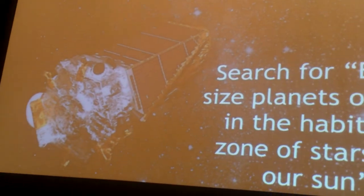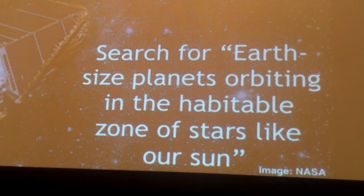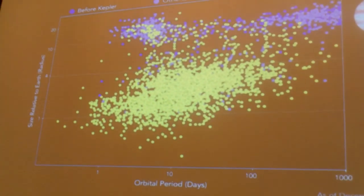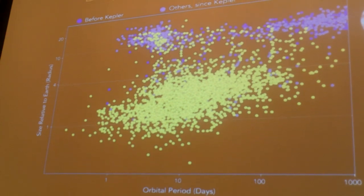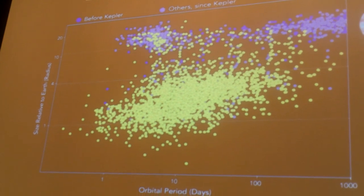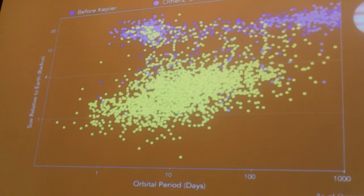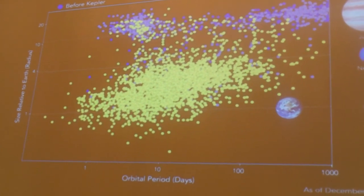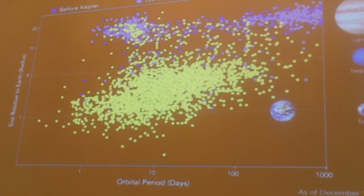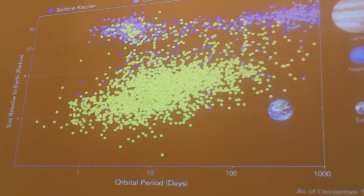Let's bring it back. As we heard yesterday, Kepler's mission was to search for Earth-sized planets orbiting in the habitable zone of stars like our Sun. We saw this diagram several times — a lot of the talks were about the gap in the upper left. But I'm also interested in the gap in the lower right. If you plot Earth on this, it's quite lonely down there, and part of my work is seeing if we can find Earth some more friends.